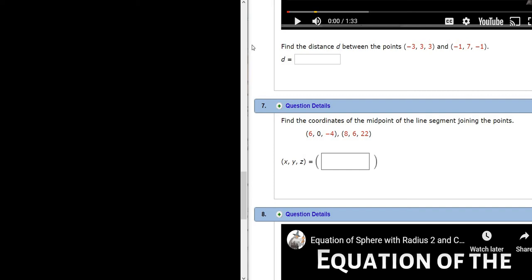Find the coordinates of the midpoint of the line segment joining the points. So we have two points in space: 6, 0, negative 4, and the other point is 8, 6, 22.